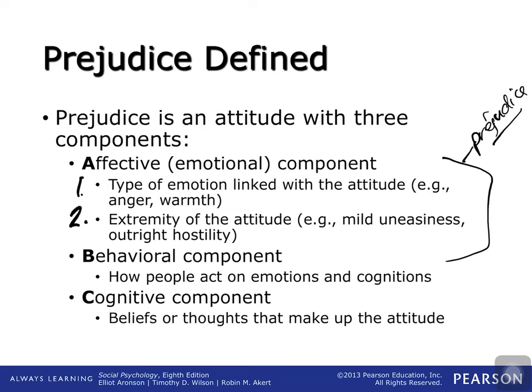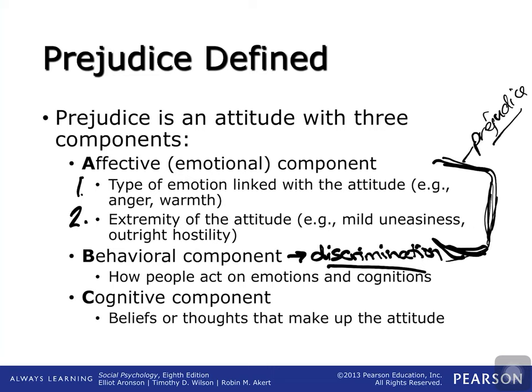The behavioral component is how we act on those emotions and cognitions. This is where discrimination falls in. Discrimination is how you act when you feel hostile towards somebody of a different political party — do you engage with them, start Facebook fights, or ignore them? The behavioral component is how you act on how you feel, and this is where discrimination can come in.